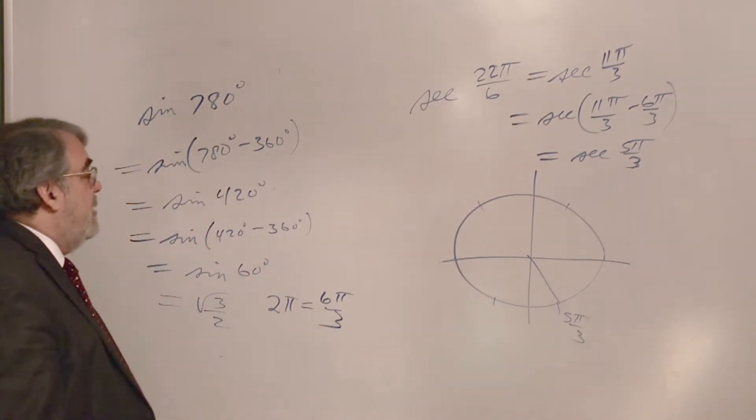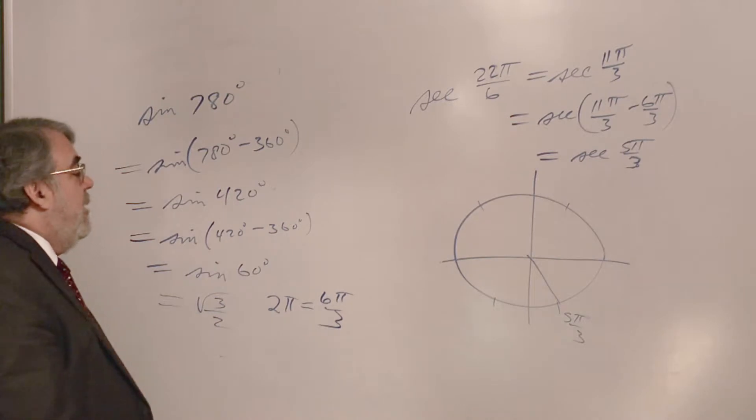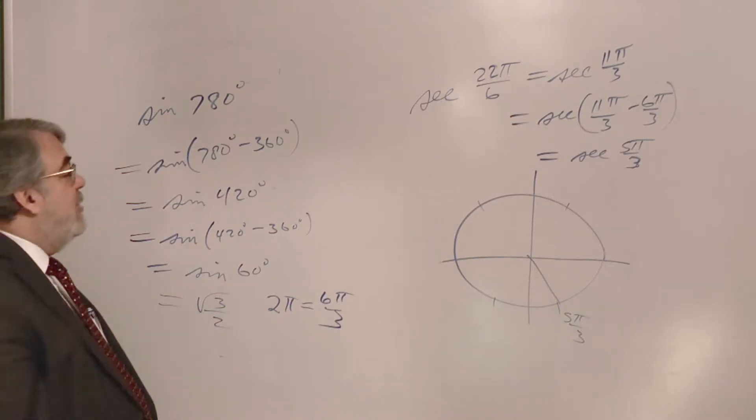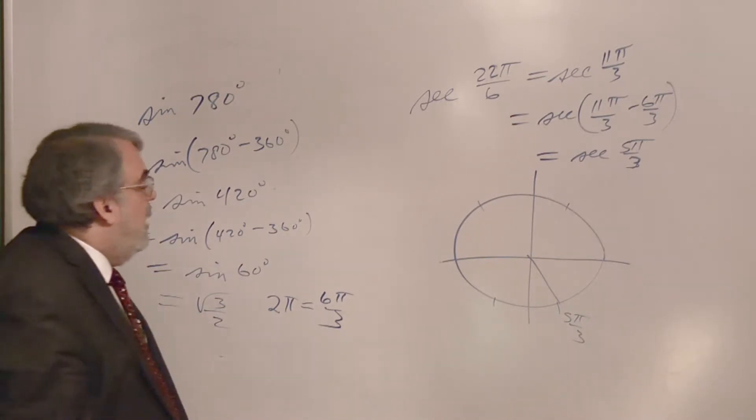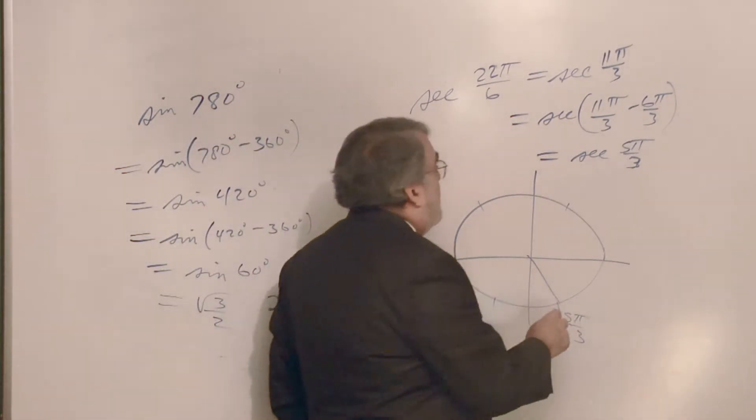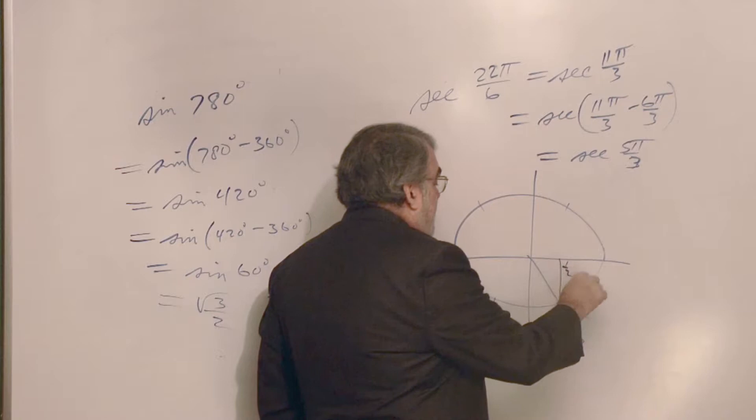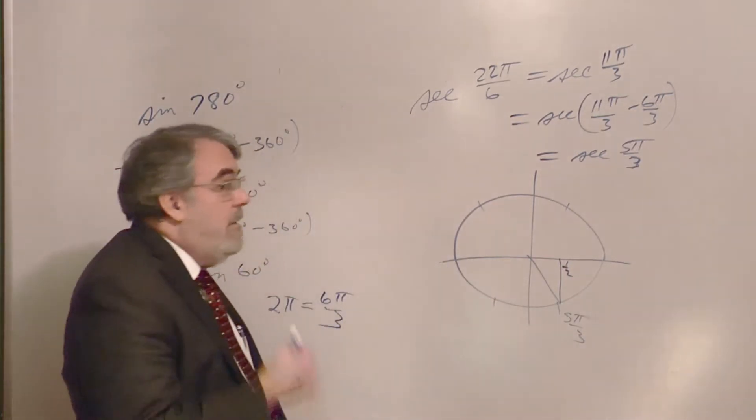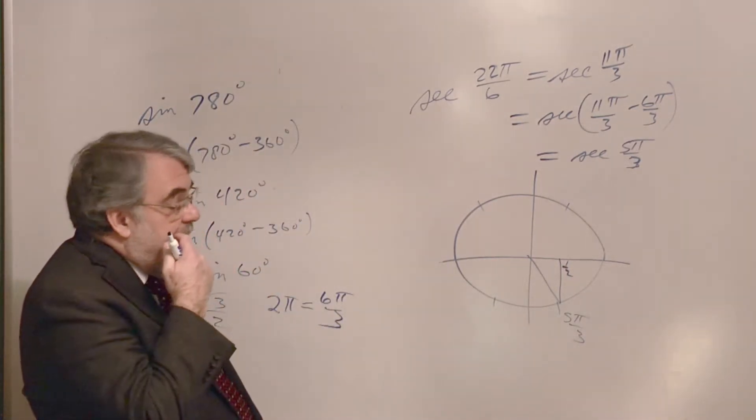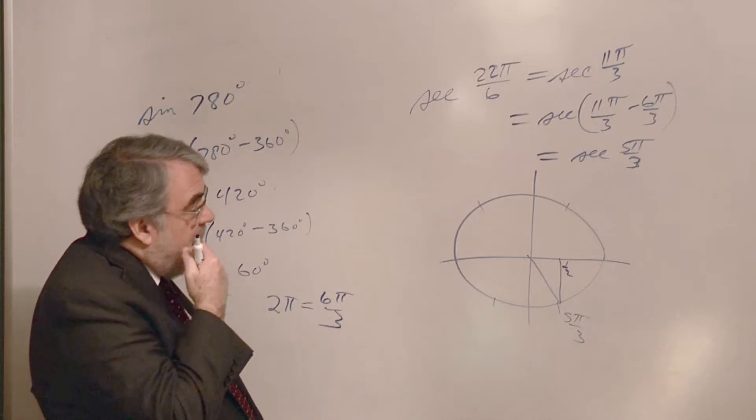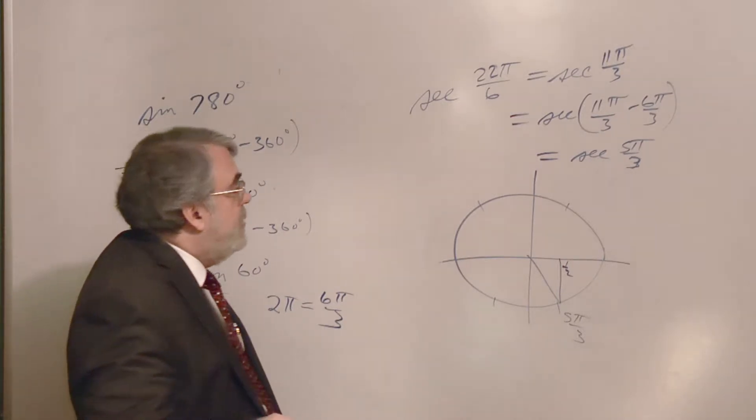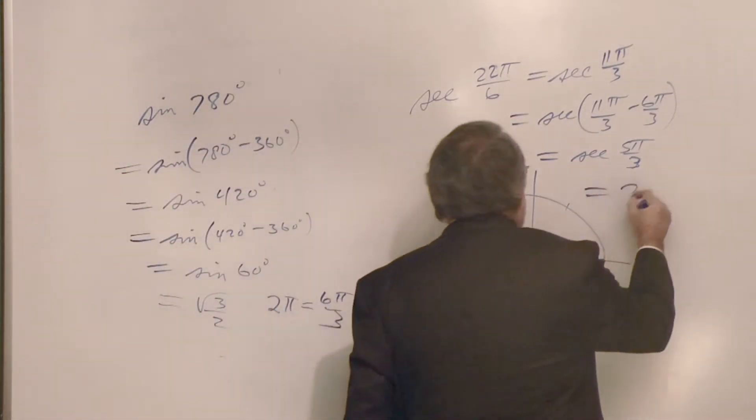And, we want the secant. Oh, boy. Okay. Well, secant has something to do with the x value, doesn't it? And, the x value for, at 5 pi over 3 is 1 half. So, the secant should be, the reciprocal of that 1 half should be equal to positive 2. There you go. Positive 2.